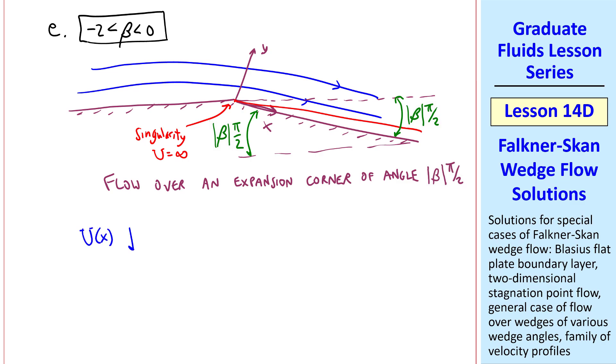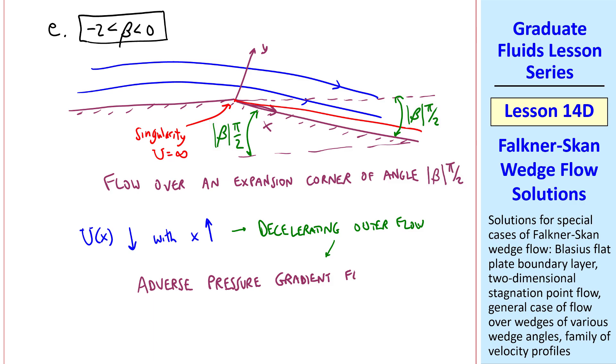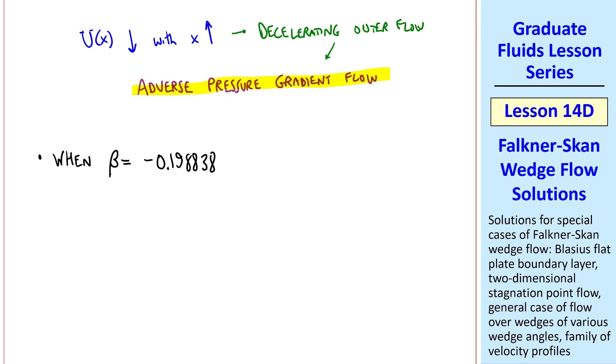In this case, u of x decreases with increasing x, since we have a negative exponent on x. So this is the case of decelerating outer flow, with u going down and pressure going up. So this family of Falkner-Skan flows represents flows with an adverse pressure gradient. Velocity profiles here will have an inflection point, as we discussed previously for adverse pressure gradient flows. In fact, if you start with beta equals 0 for the flat plate case, and then start making beta be larger in the negative direction, you reach a point where this adverse pressure gradient becomes too steep, and we get a separating flow. It turns out that this happens when beta is negative 0.198838, to be precise, which represents an angle of about 18 degrees.